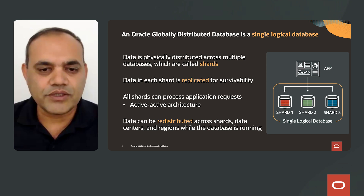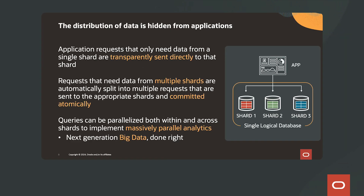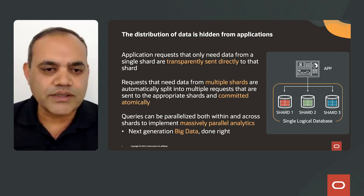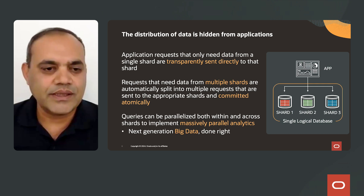Data can be redistributed across shards, data centers, and regions while the database is up and running. The distribution of data is hidden from the applications. Requests that only need data from a single shard are transparently sent directly to that shard. Requests that need data from multiple shards are automatically split into multiple requests, sent to the appropriate shards, and committed atomically. Queries can be parallelized both within and across shards to implement massively parallel analytics — this is the next generation of big data done right.